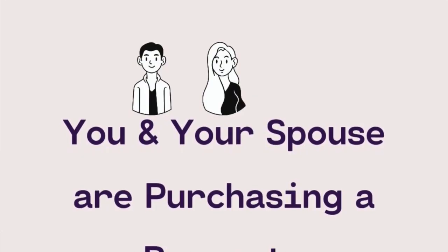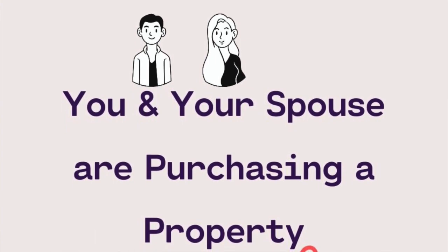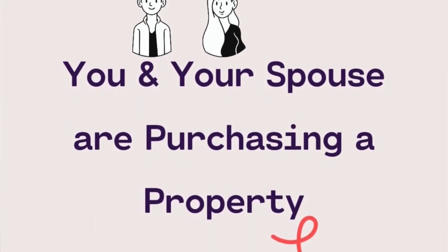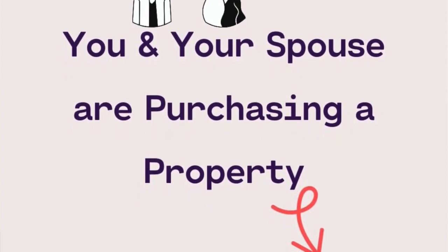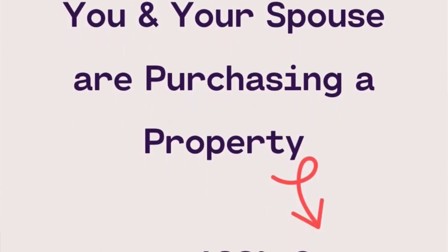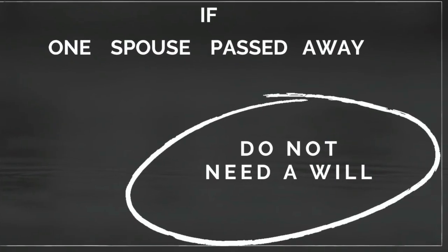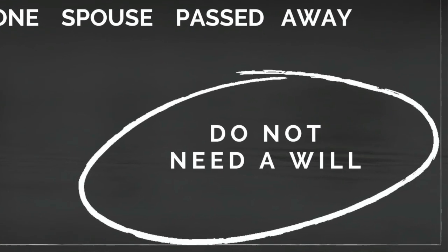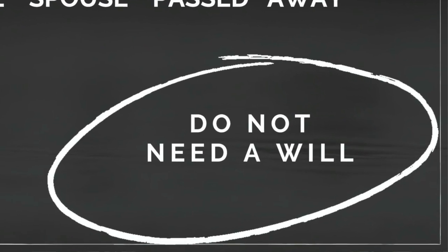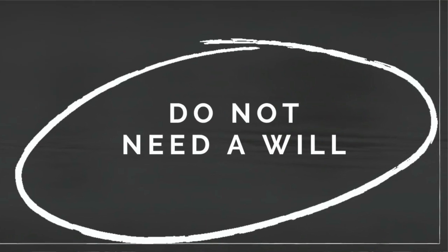For example, if you and your spouse were to purchase a property, the presumption is that both of you are 100% owners of the property. In such a situation, lawyers will list you as joint tenants. That means if one spouse passes away, the property automatically goes to the other surviving spouse.